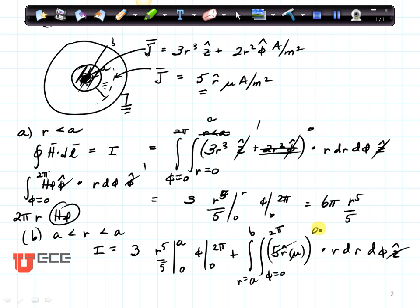So what I have here is that 2πr H_phi is equal to 3 times a to the fifth over 5 times 2π. Solve for H_phi, and you've got it.